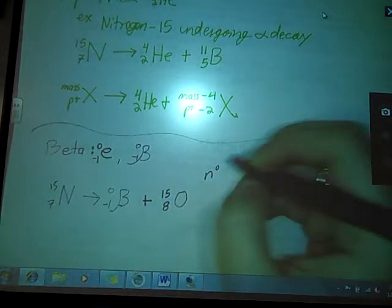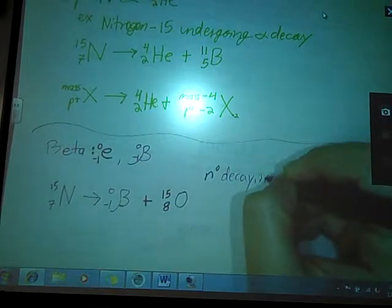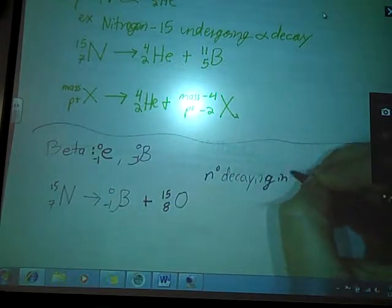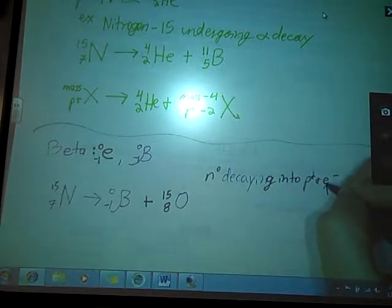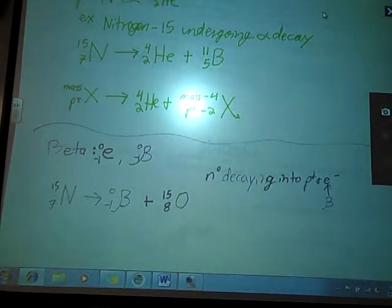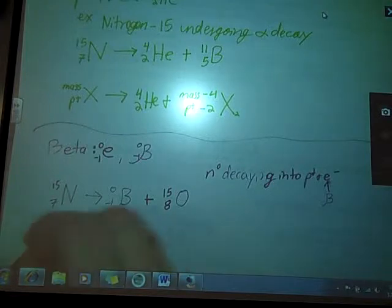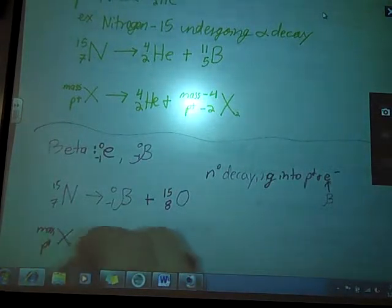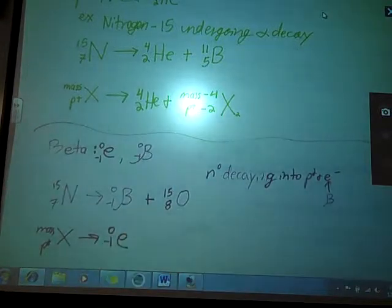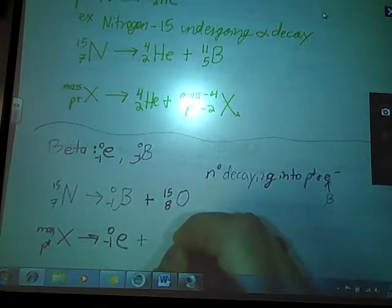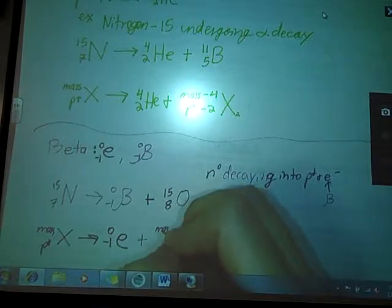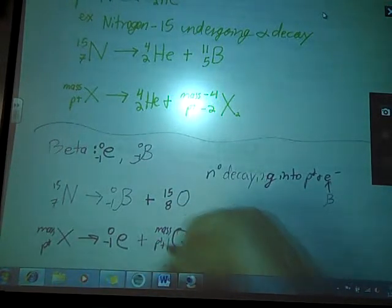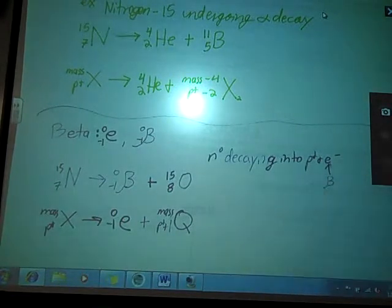So again, we have a neutron decaying into the proton and a beta particle. Not just any electron, but a fast moving one, a beta particle. The beta particle whizzes off into space, leaving the proton behind. So general formula for this: We start off with the mass on top, protons on bottom. It emits a beta particle plus some new nuclei with a mass number that is the same and our atomic number plus one. Since that neutron again decayed into a proton and a beta particle.